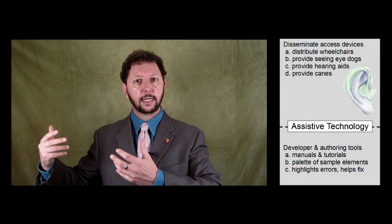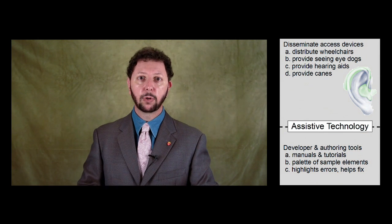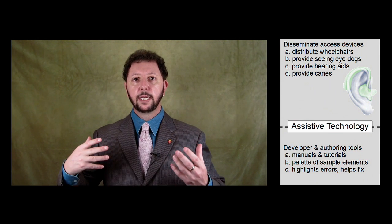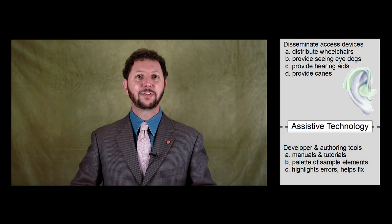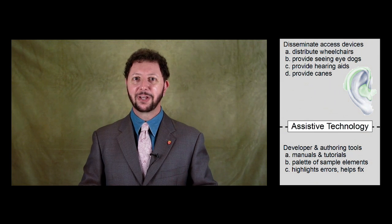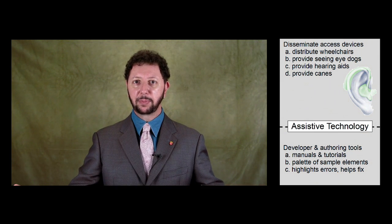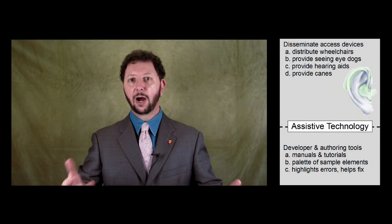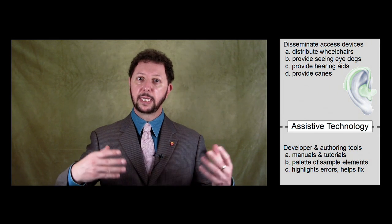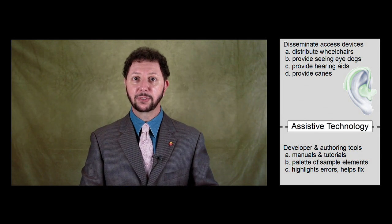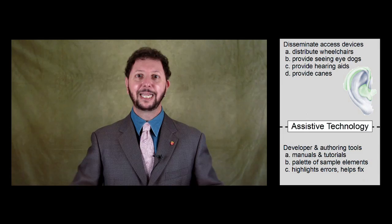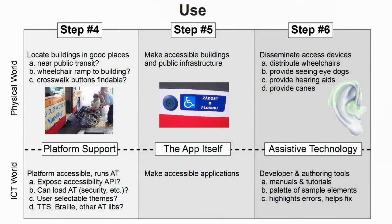Similarly, in the ICT world, we need to make sure that assistive technologies are disseminated to the people who need them. The screen readers are available. The screen magnification systems are available. The on-screen keyboards are available. And users are trained in how to use these.